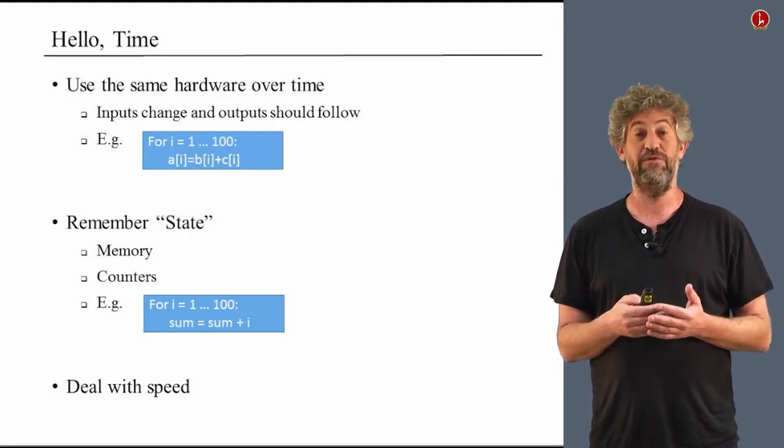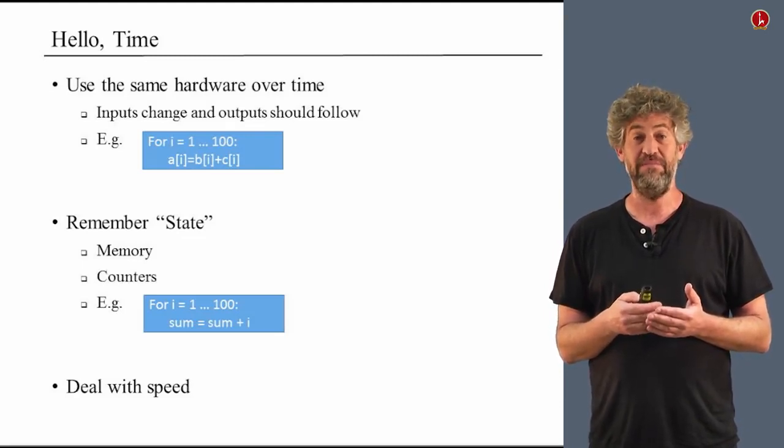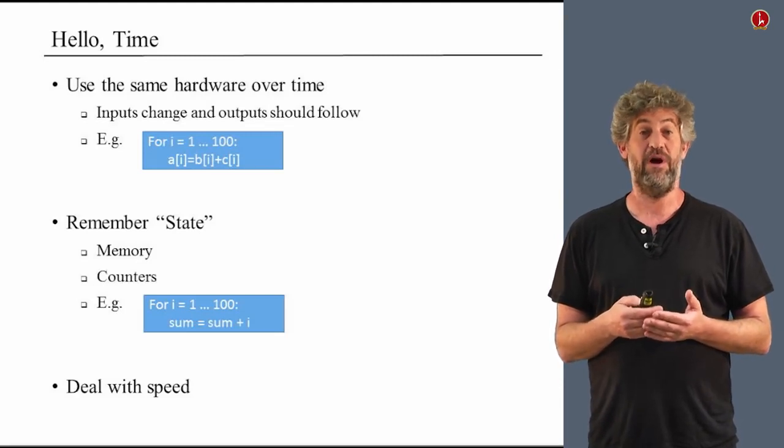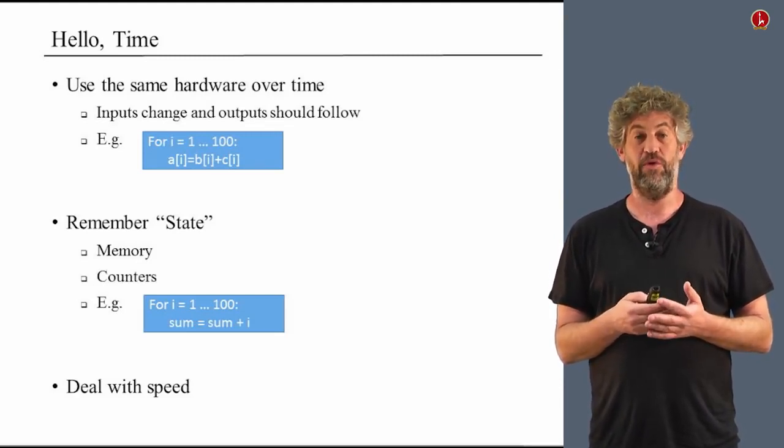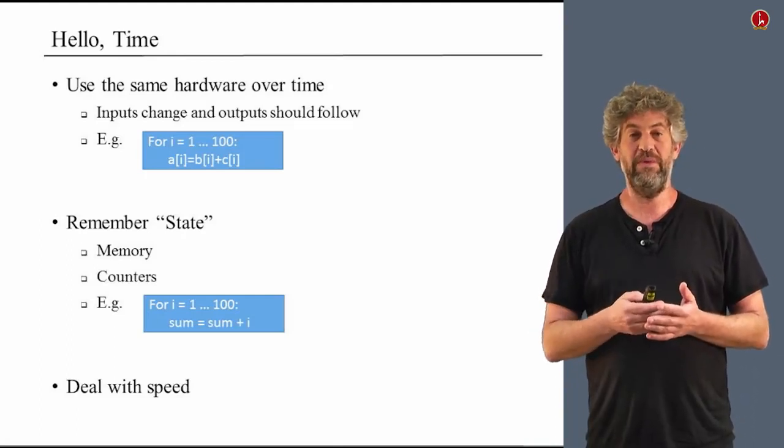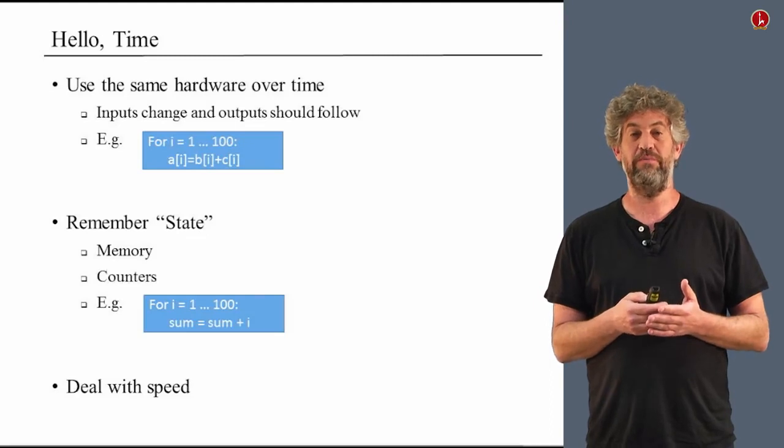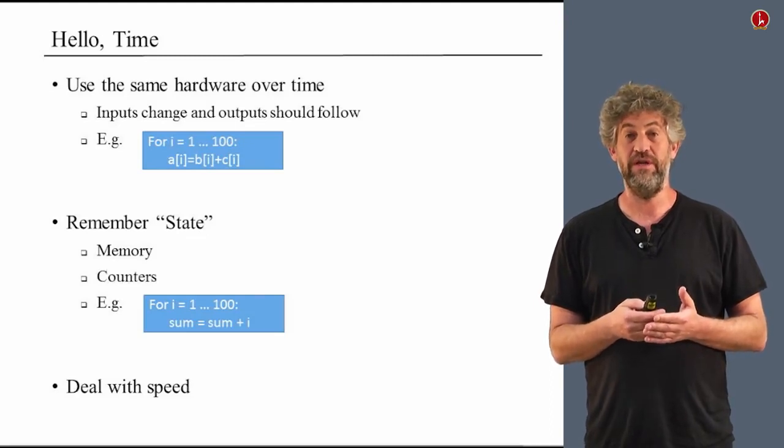For example, if we take some kind of loop in a software program that calls for doing the same thing many times, we want to be able to use the same hardware to do that. Another important thing that we need time for is to actually remember things from the past. We need to remember intermediate results. We need to remember where we are in a computation.